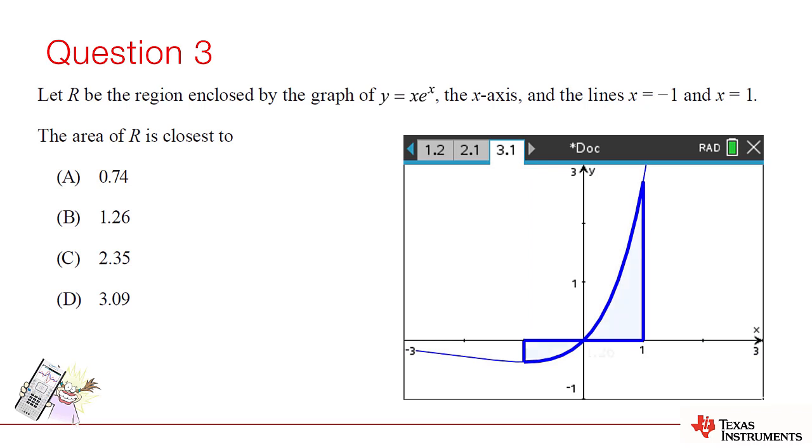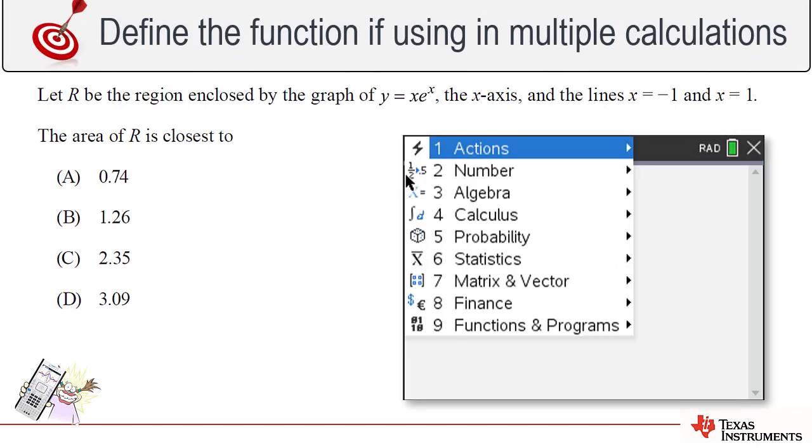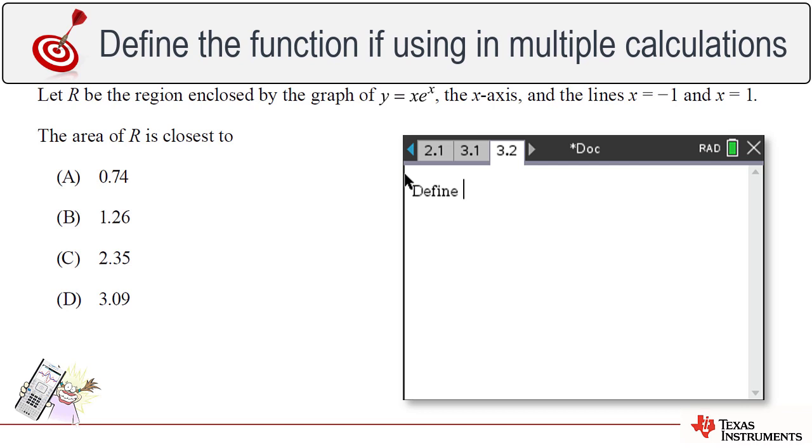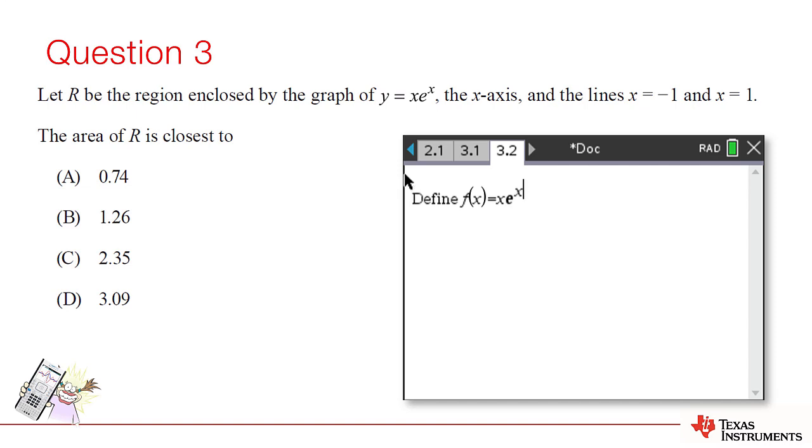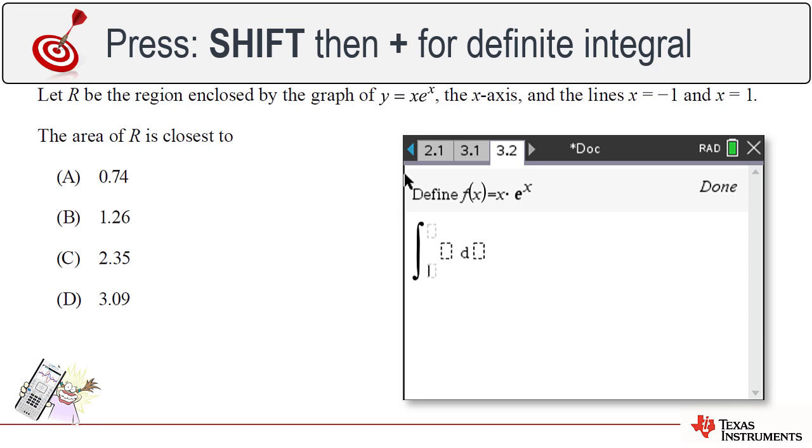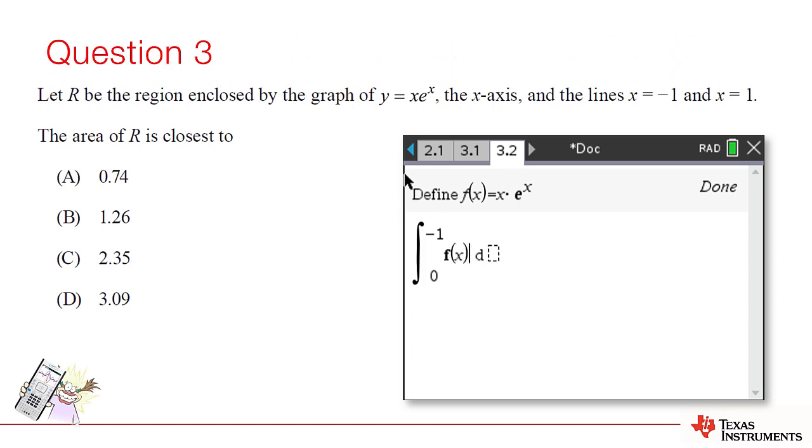The area in question includes sections that are both above and below the x-axis, so the definite integral would therefore include positive and negative values. We could calculate the definite integral from 0 to 1 and then also from 0 to negative 1. Reversing the terminals produces a positive result allowing us to simply add these two answers.